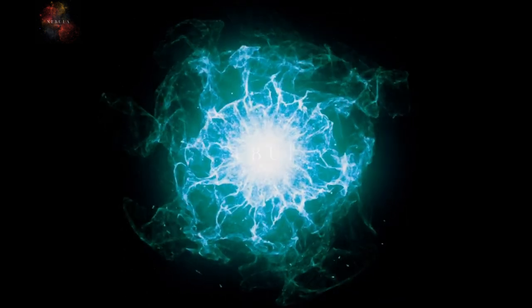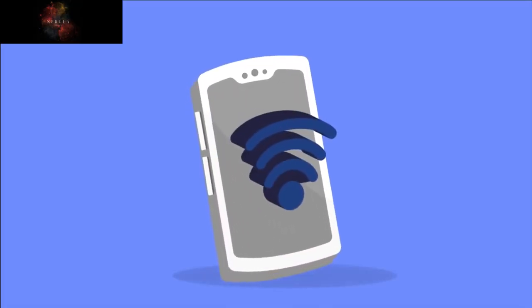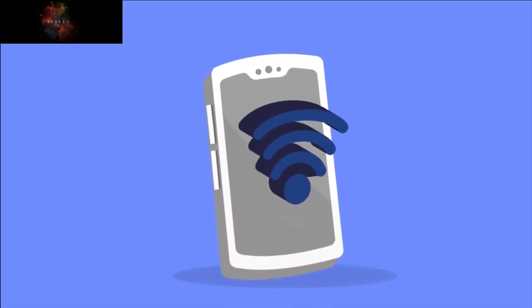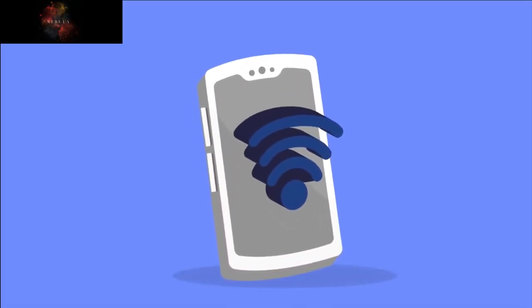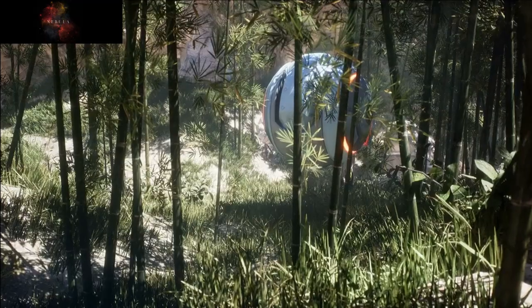Energy packets are currently coursing through your body, from the light illuminating your room to the glow emanating from your computer monitor. These energy packets, carried by electromagnetic waves, power the functioning of the modern world. They enable Wi-Fi signals that connect you to the internet and Bluetooth technology that links your cell phone to your car's radio.